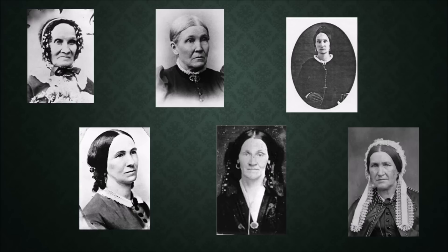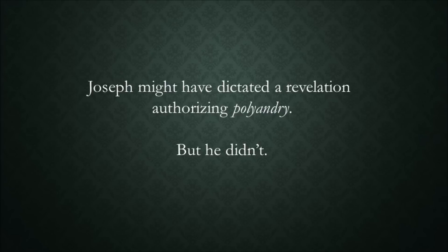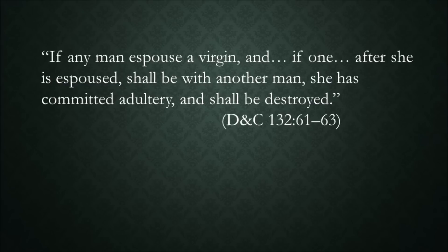No biblical examples were available like in the case of a plurality of wives. An 1891 article in the Popular Science Monthly on polyandry declared, 'It is inconceivable that men should have voluntarily initiated polyandry; even if, by doing violence to our common sense, we suppose such a thing to be possible on the part of the men, how would the women submit?' This was not directed towards Joseph Smith, but the quandary would have been the same. Joseph might have dictated a revelation authorizing polyandry, but he didn't. Instead, he dictated a revelation condemning polyandry that states, 'If any man espouse a virgin, and if one, after she is espoused, shall be with another man, she has committed adultery and shall be destroyed.' So we are left wondering what Joseph might have said to convince a woman to go against social and moral conventions.